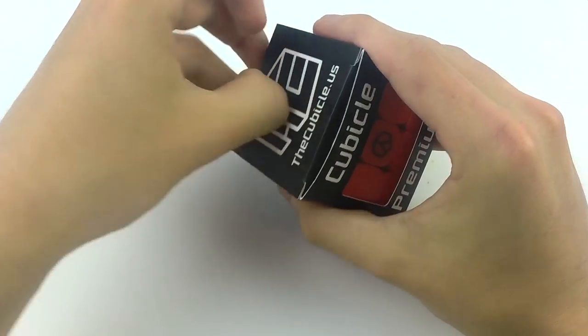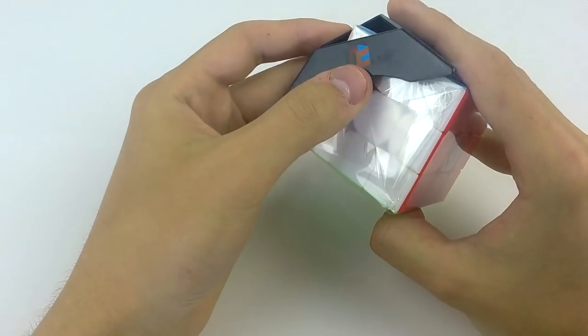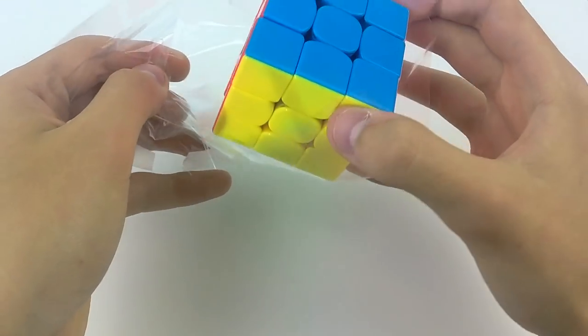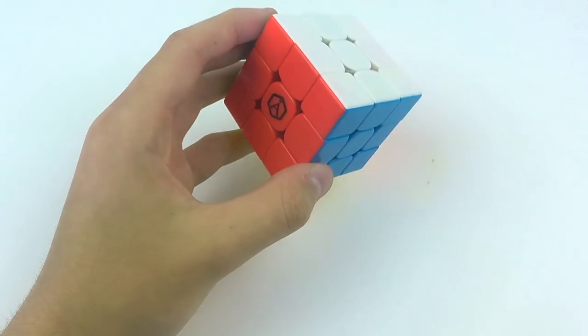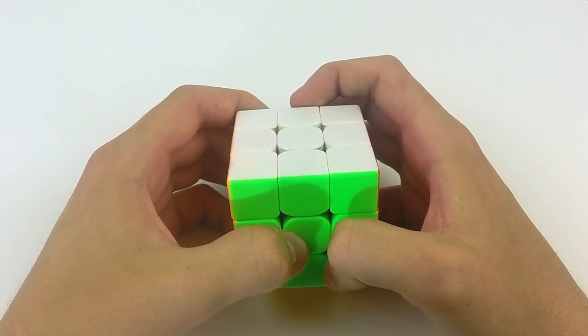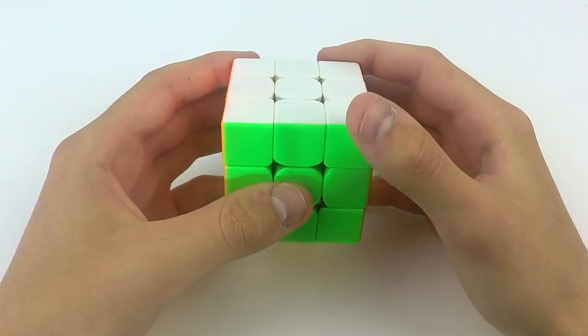Okay, now let's open up the 3x3. Once again, it comes with the stand. And I think this is the polymer-coated GTS2M. So let's do some first turns on it.